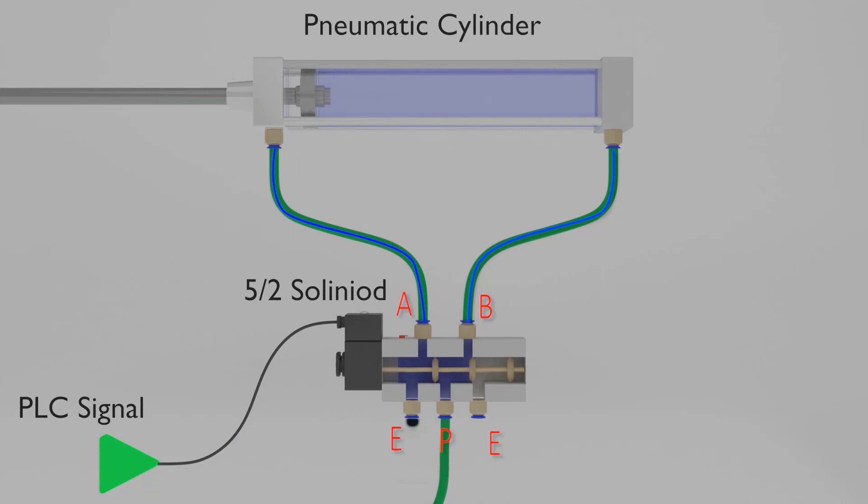Now when the PLC signal is turned off, it de-energizes the coil of solenoid valve. Its spool moves and links the pressure port with port A of solenoid valve and port B with exhaust port. This way the compressed air moves towards the port A and through pipe it enters the front port of the cylinder.